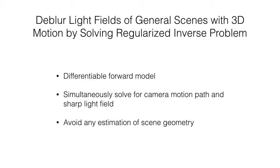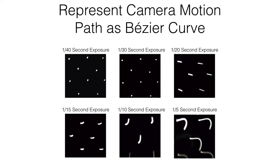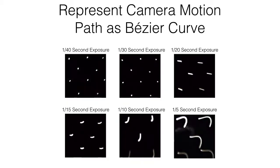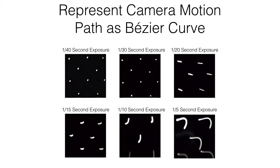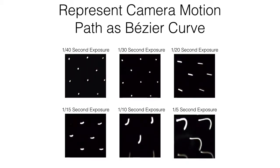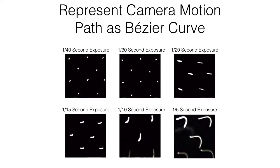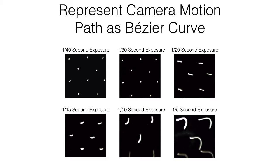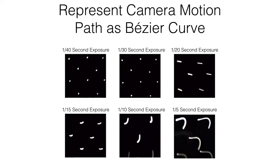Since our forward model treats motion blur as an integration of transformations of the sharp light field, we can simplify the problem and bypass any estimation of scene geometry. By representing the camera motion path as a Bezier curve, we can directly solve for its control points, which is a much lower dimensional optimization problem than alternative approaches. We observe that common camera motion paths are able to be represented by quadratic or cubic Bezier curves, as visualized by these real light fields of point-source arrays.